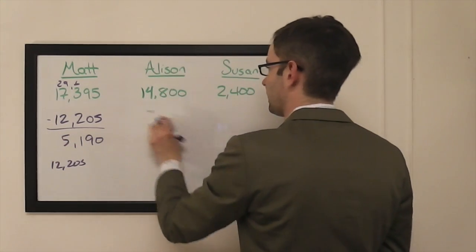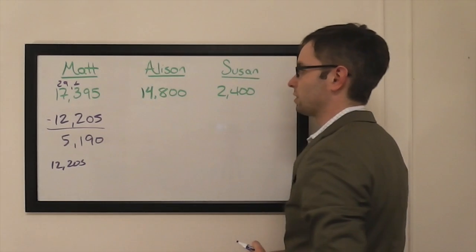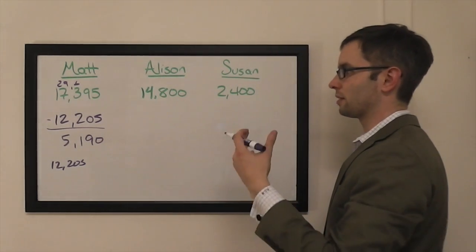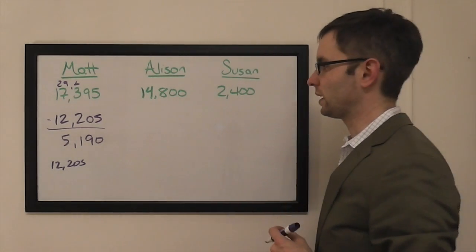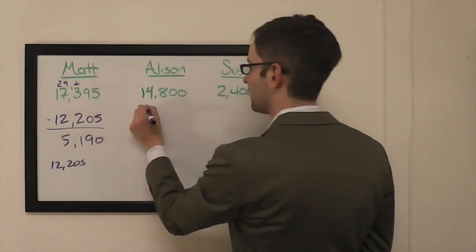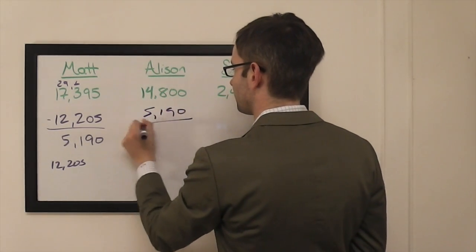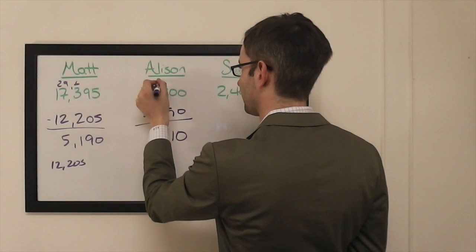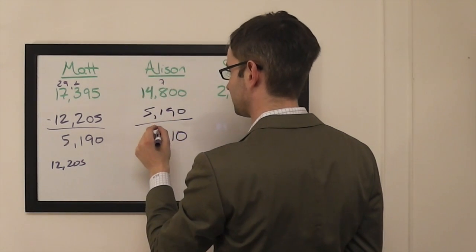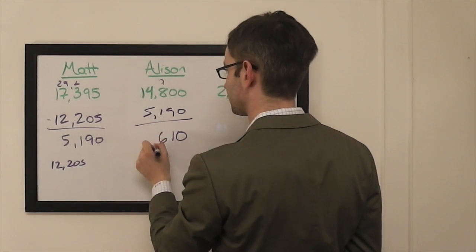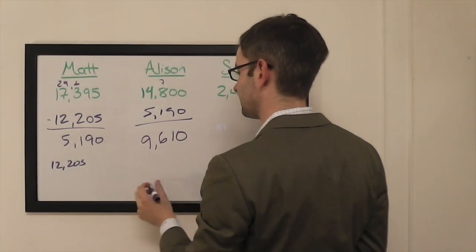So you'll see why, had Allison gone for everything, she would have been in a much better situation. She can miss Final Jeopardy and still win the game handily. $5,190 is going to leave us with $10,780. $9,610 is her maximum.